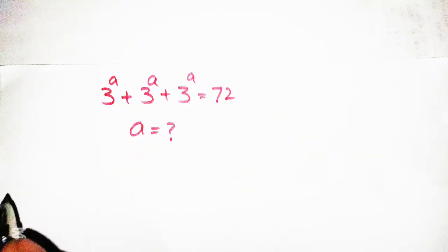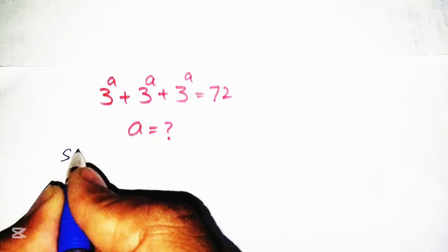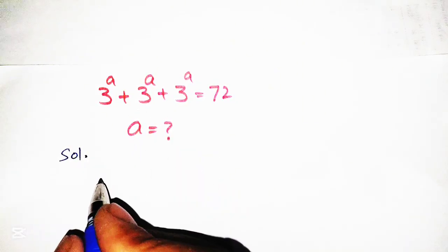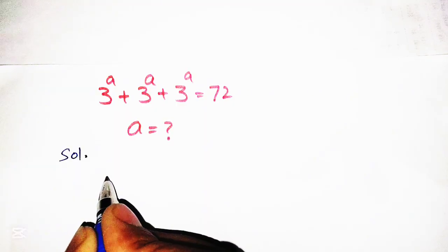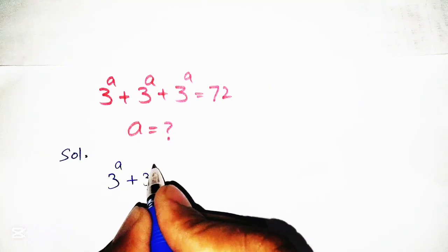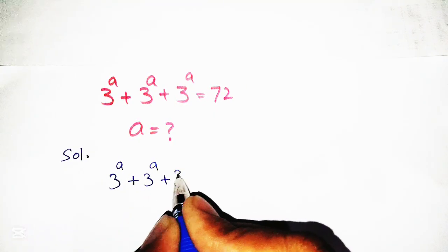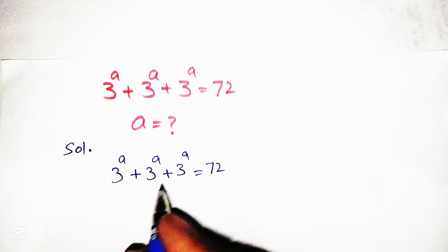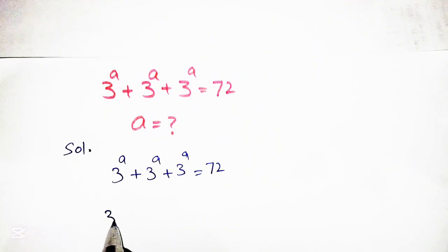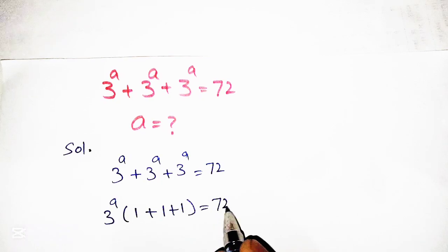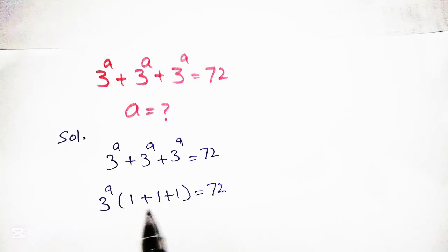Let's start this solution. From the given equation, we rewrite it as 3 raised to a plus 3 raised to a plus 3 raised to a is equal to 72. Taking 3 raised to a as common, we can write this as 3 raised to a into 1 plus 1 plus 1 is equal to 72.